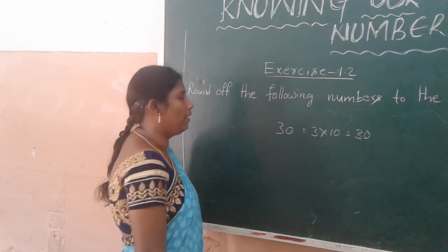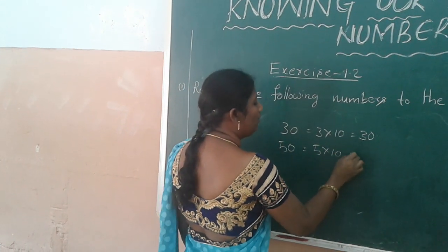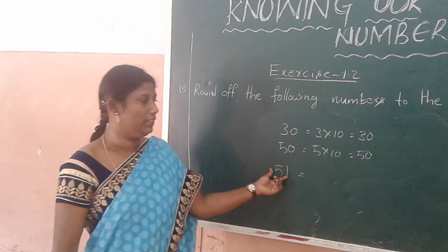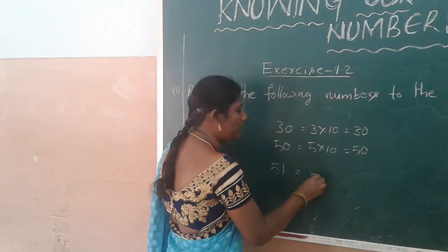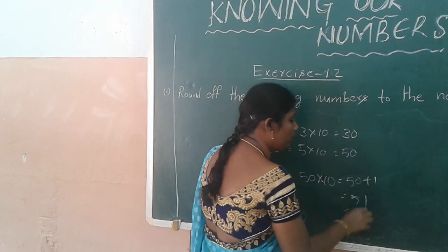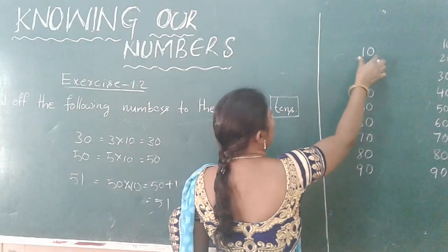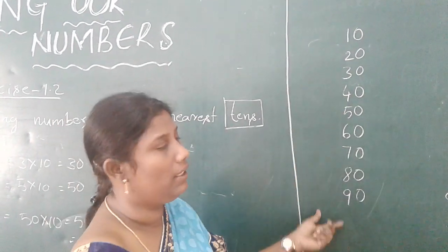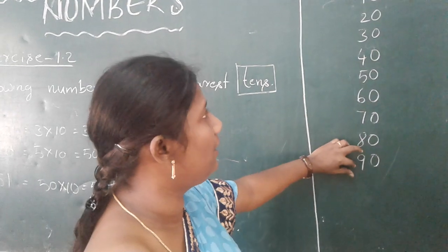3 times 10 are 30. Take 50: 50 means 5 into 10, so 5 tens are 50. Now take 51 — this is not a tens number only; it is 10 plus 1 as well. I am talking about only tens: 10, 20, 30, 40, 50, 60, 70, 80, 90. Any number that is a multiple of 10 is called a tens number — 1 ten, 2 tens, 3 tens, up to 9 tens.